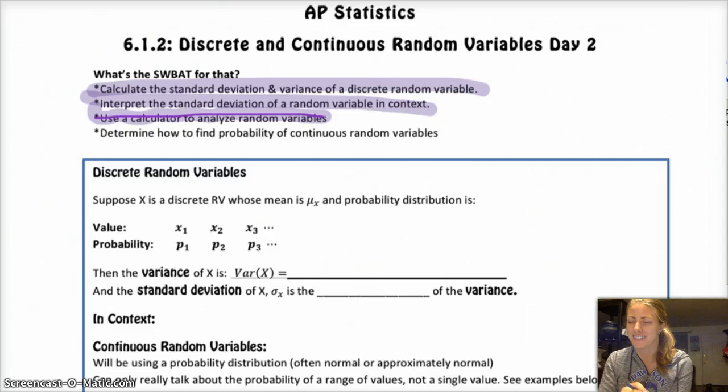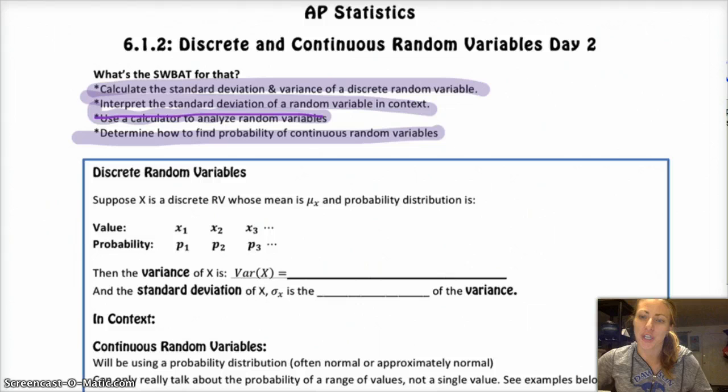If we have time at the end, I might show you, but I think it'll just be better if we don't. And then last, we'll look at continuous random variables. Okay, so number one, discrete random variables.